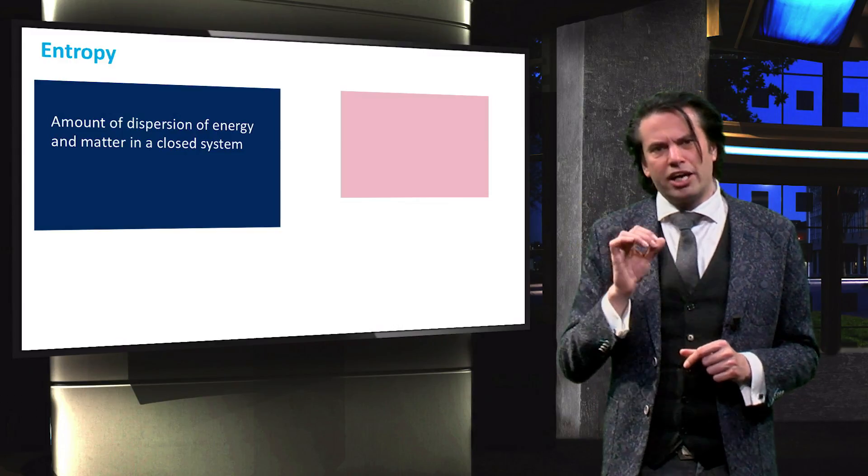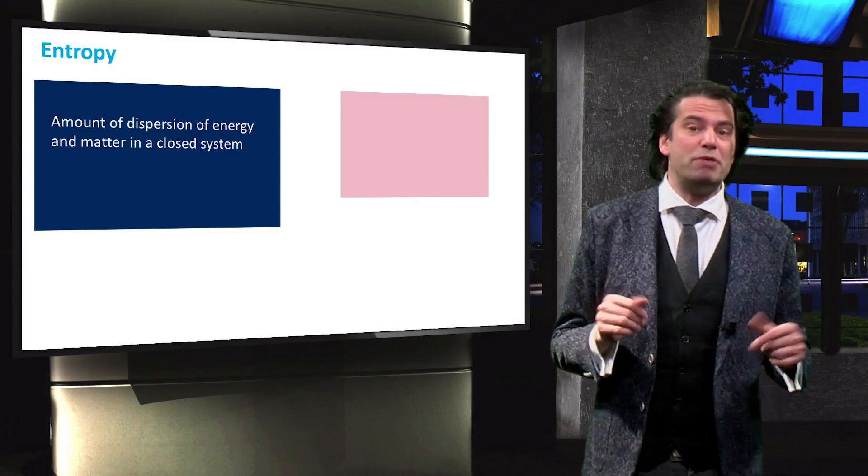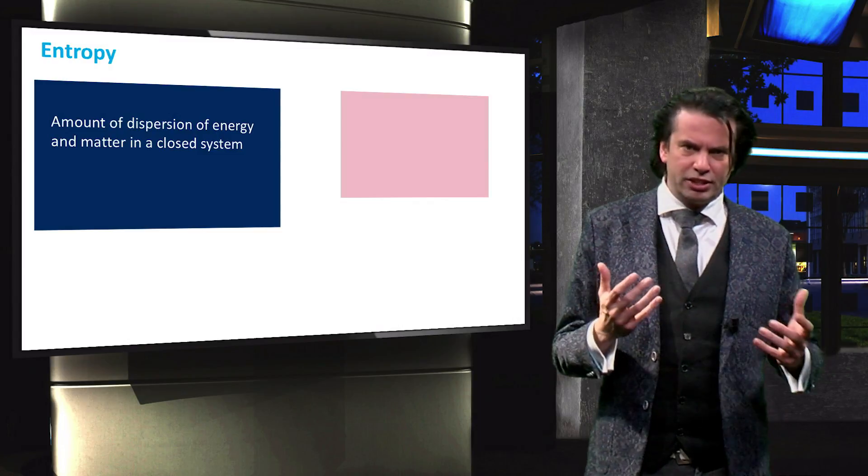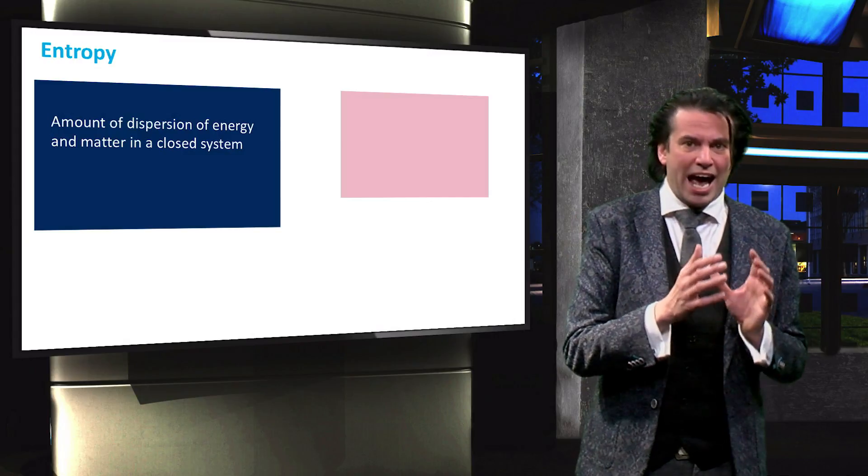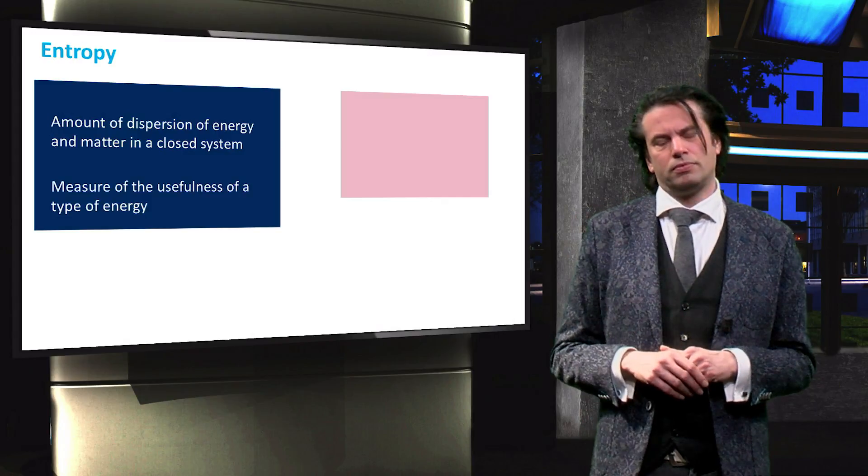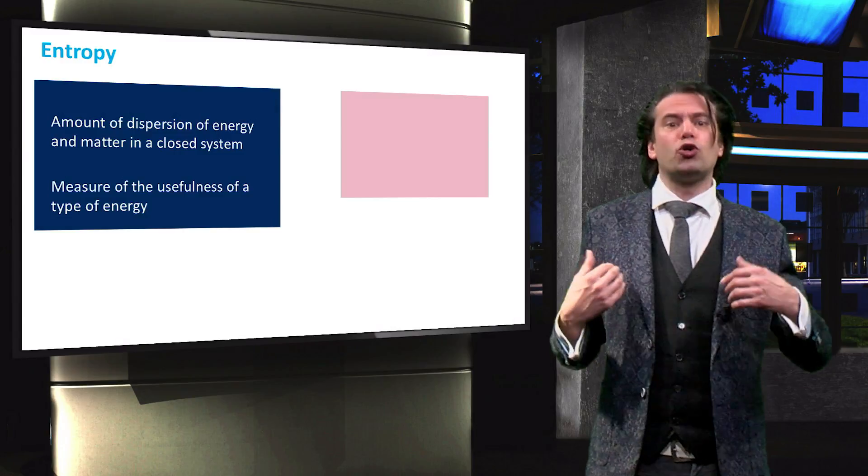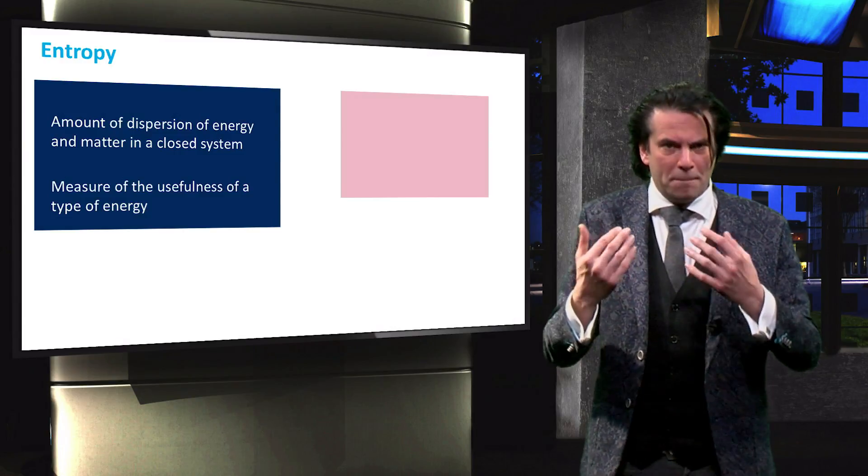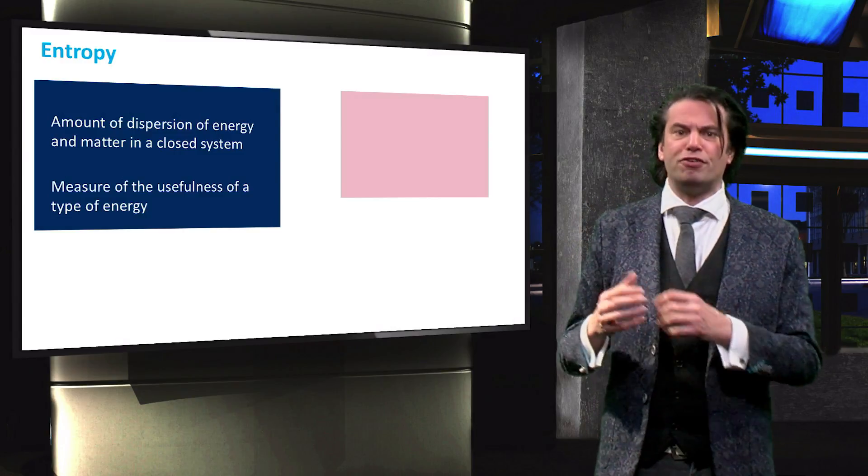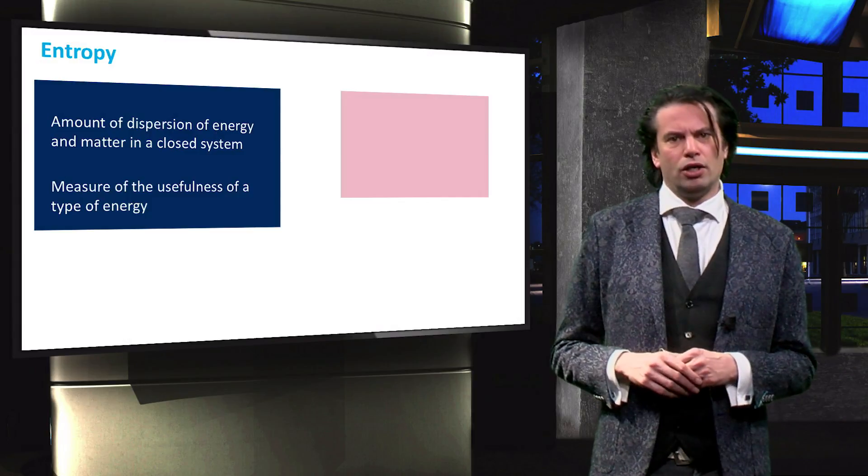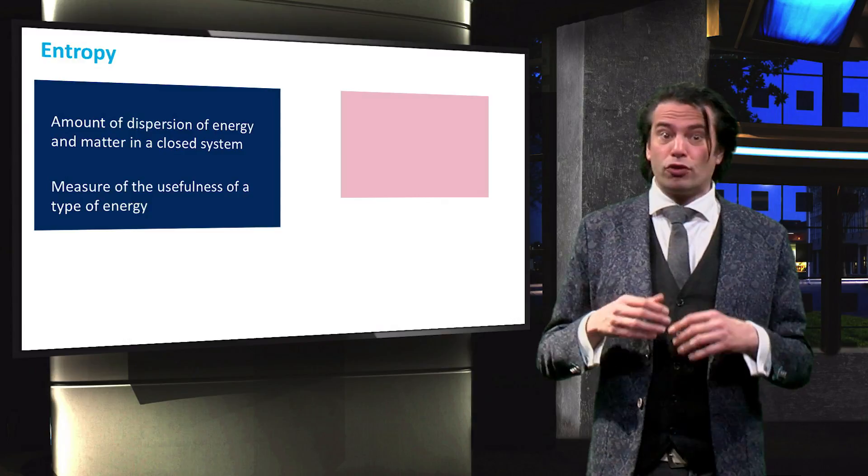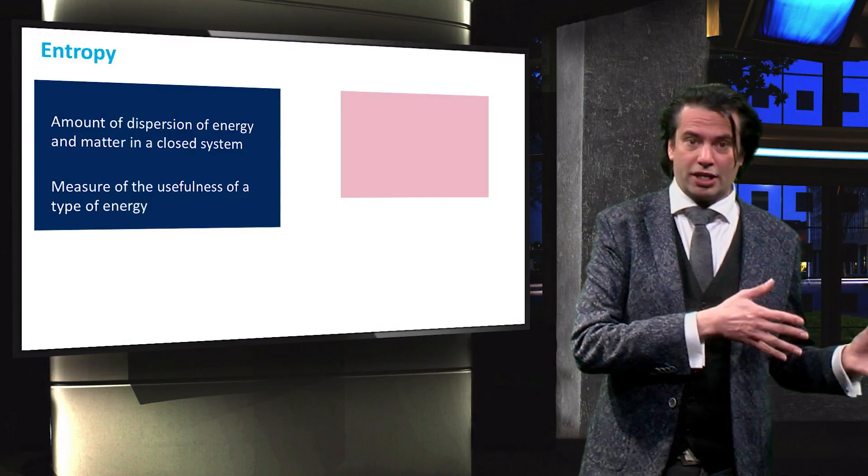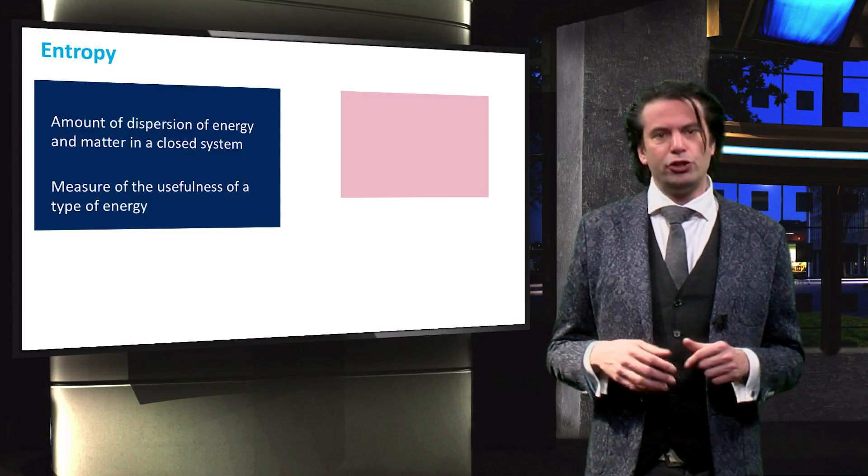Since the hot liquid could more easily be converted into other forms of energy, the quality of the energy contained in the closed system has decreased. The entropy can therefore also be interpreted as a measure of the usefulness of a type of energy. The lower the entropy of a type of energy, the easier it is to convert that energy into another type, so the higher its usefulness.